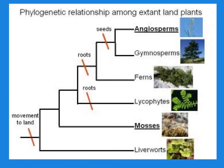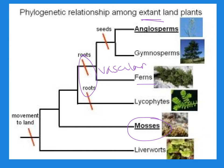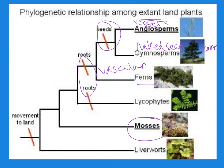Looking at the phylogenetic relationships between extant — meaning living today — plants: mosses and bryophytes, including liverworts, are very small and low to the ground. Then we got roots and a vascular system, which we see with ferns. Then we have the evolution of seeds, which gave us the gymnosperms. Gymno means naked — naked seeds — so these are pine cone-bearing plants like pine trees. Angiosperm literally means vessel seed, and the seeds, instead of being naked like on a pine cone, are actually in a vessel — and that vessel is a fruit.